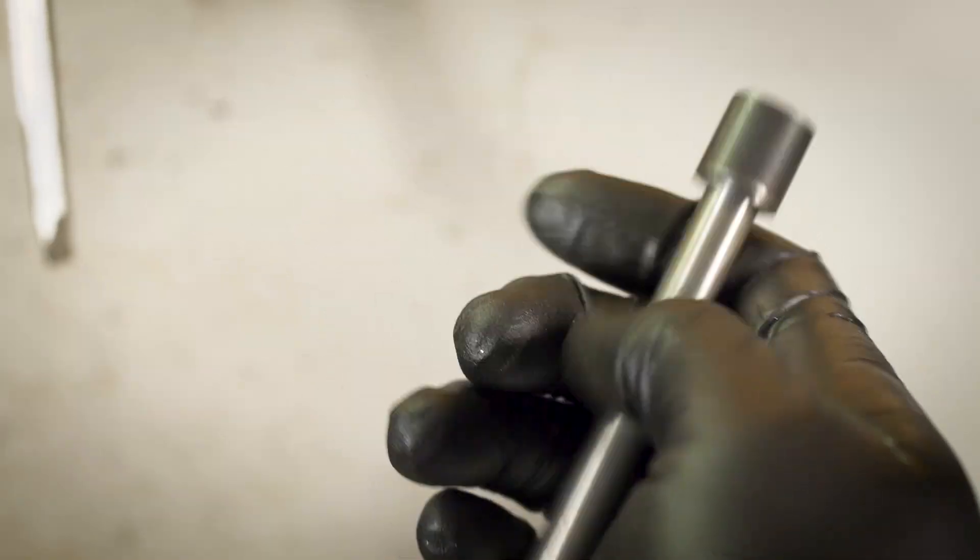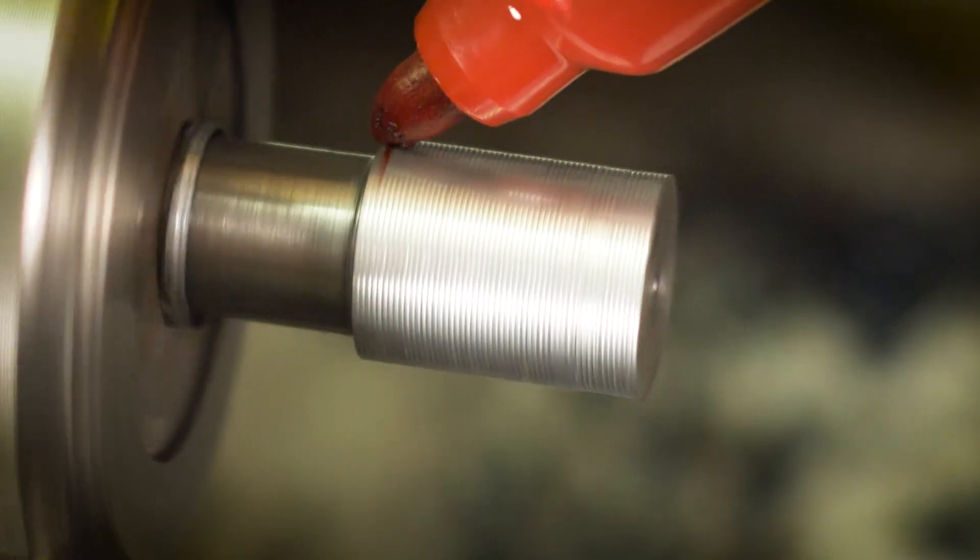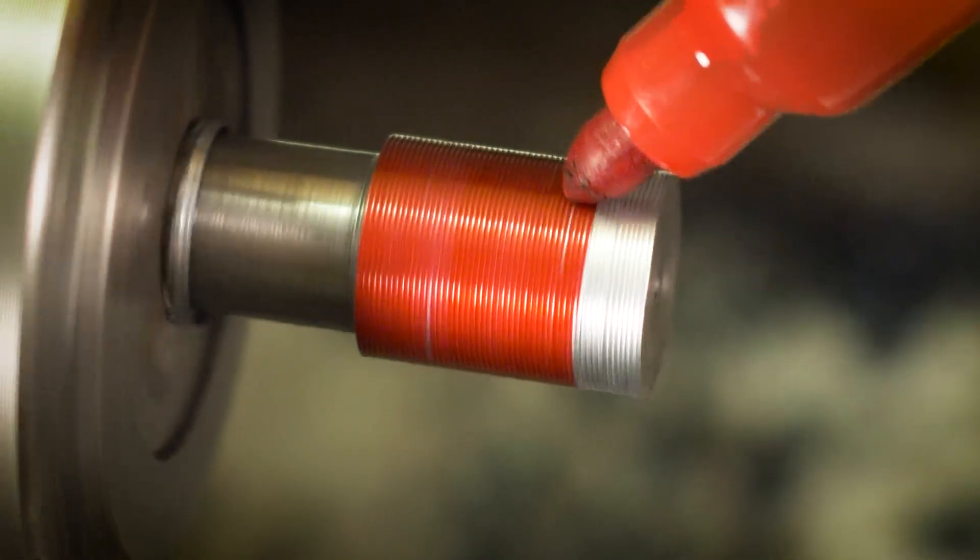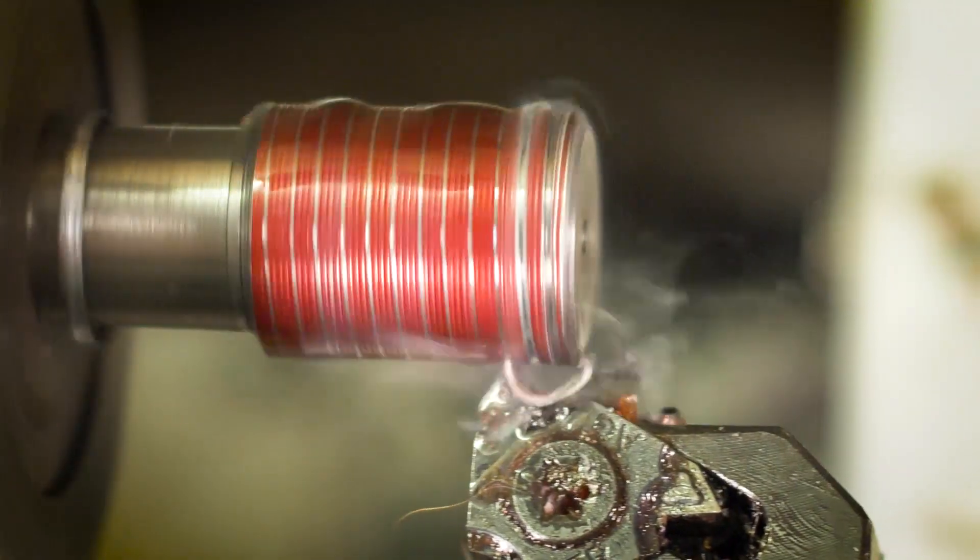After parting and flipping around, the end is then prepared for threading. I marked the surface with Sharpie and performed a scratch pass. And then I can confirm my thread pitch settings before going to town on it.